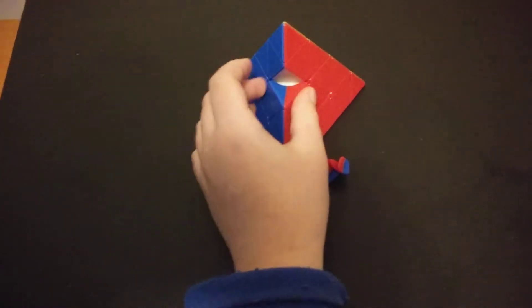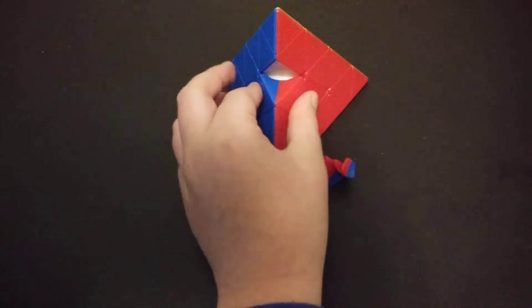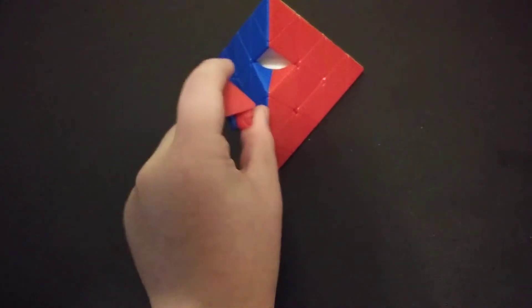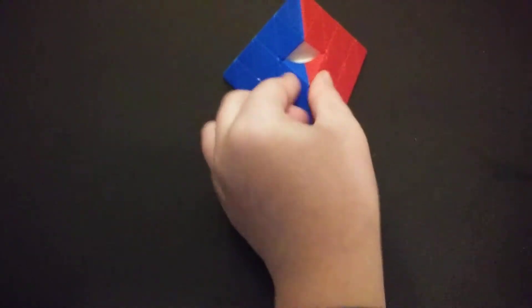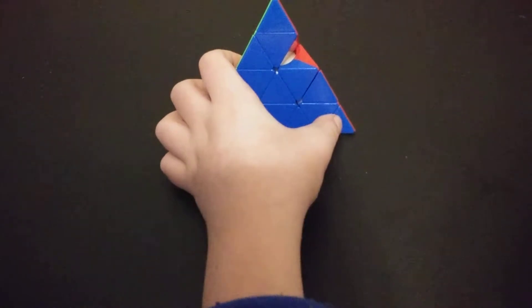The first step is that if your Master Pyraminx has popped more ferociously than this, you're going to have to make it so that there's one edge piece left to assemble. Not one of these big ones called center edges, not one of these. One of these smaller edge pieces that are close to a tip.